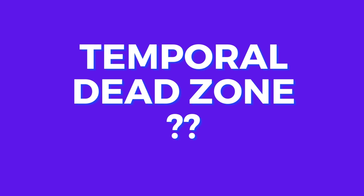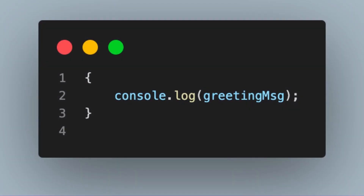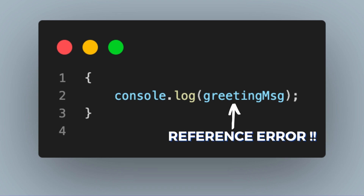So what really is the Temporal Dead Zone? To understand the concept, it is better to begin with an example. Look at this console.log statement within a set of curly braces. If we simply execute this single file of JavaScript, we are going to get a reference error: the variable greetingMessage is not defined. The message itself is pretty self-explanatory — JavaScript has no clue about this variable.